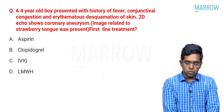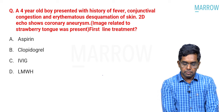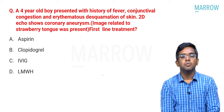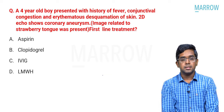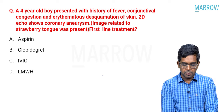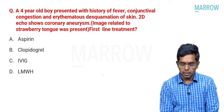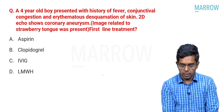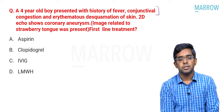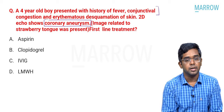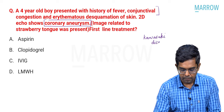Moving on: a four-year-old boy presented with fever, conjunctival congestion, and erythematous desquamation of the skin. 2D echocardiography shows coronary aneurysms. Many students recall that images were given in the question — including strawberry tongue and skin desquamation. What should be the first-line treatment? With this classical history and coronary aneurysm on echo, you should think of Kawasaki disease.